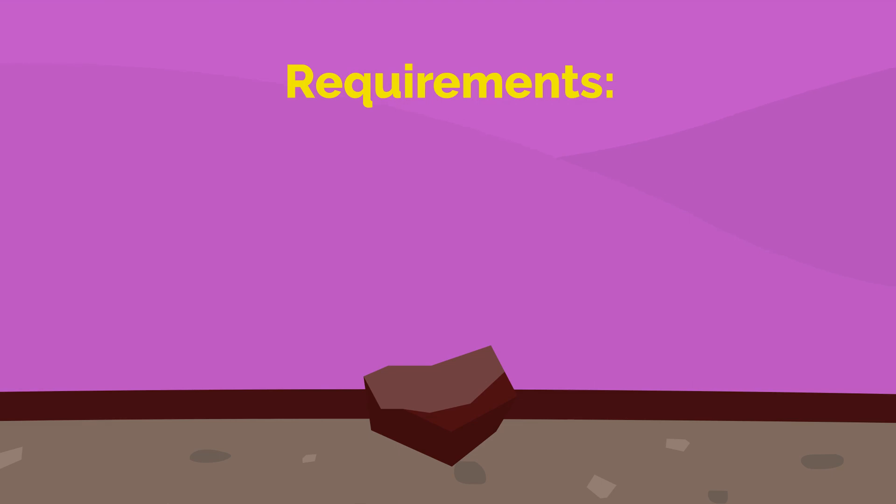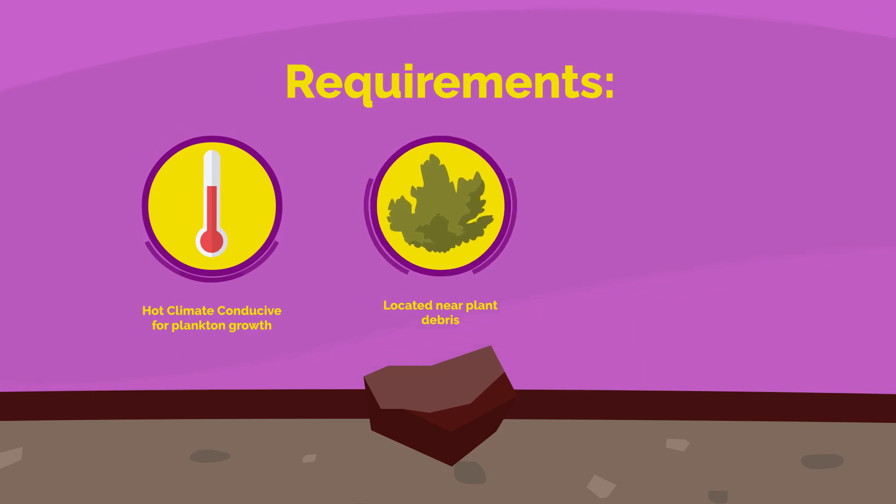For instance, a hot climate is conducive to the growth of large quantities of plankton. Also, it has to be near the mouth of a major river carrying a lot of plant debris. Furthermore, there shouldn't be any nearby mountain that could limit the volume of inorganic sediment within the rock.